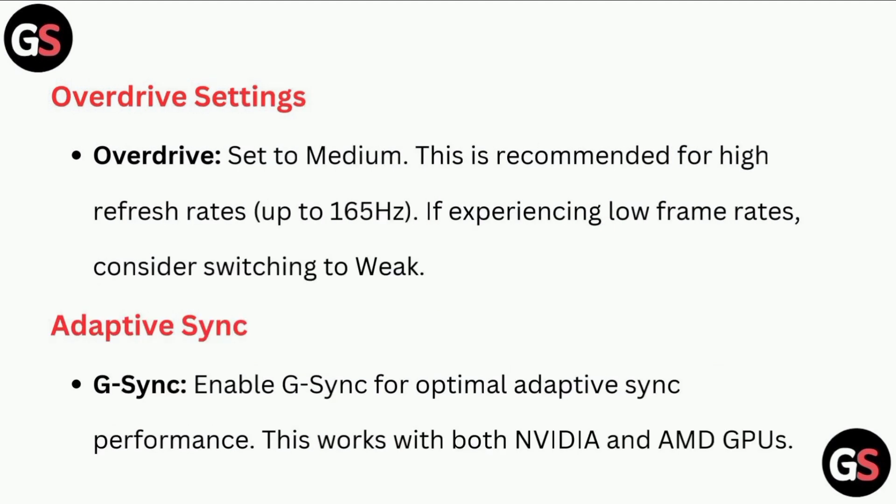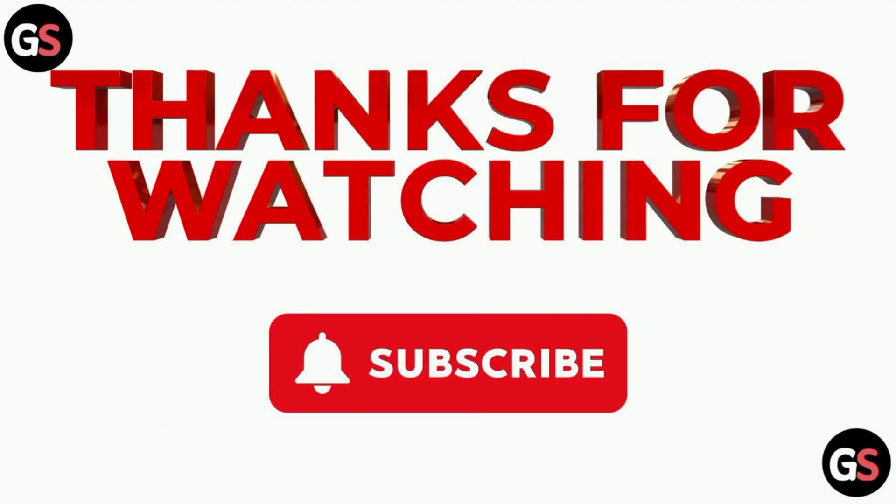Overdrive settings: overdrive set to medium is recommended for high refresh rates. If experiencing low frame rates, consider switching to weak. For adaptive sync, enable G-Sync for optimal adaptive sync performance — this works with both Nvidia and AMD GPUs. Thank you for watching our video.